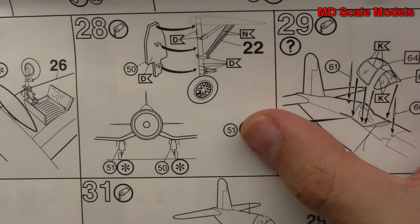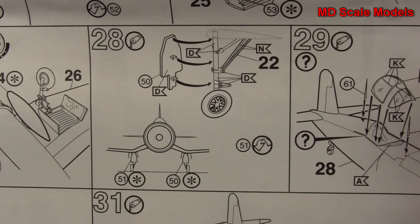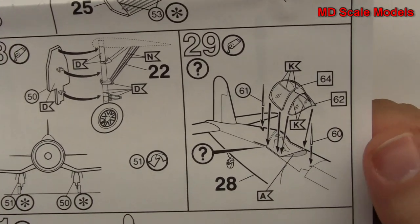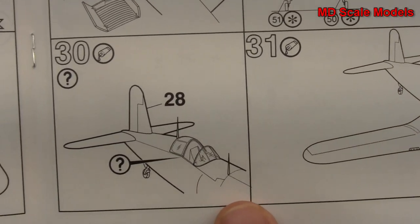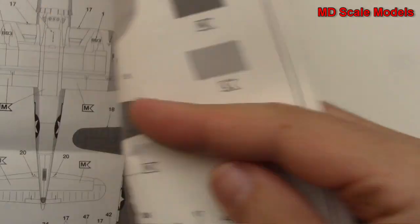So the wheel well covers going on the front of the landing gear, then our canopy goes on as well as our antennae. You can either have it open or closed. And then our propeller goes on.